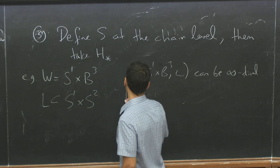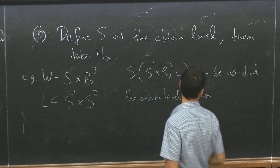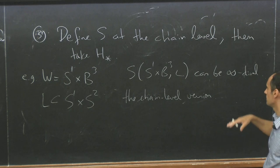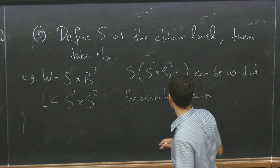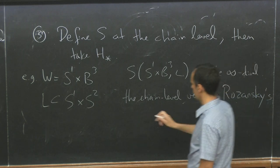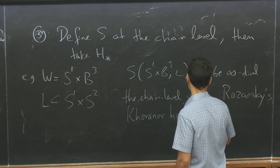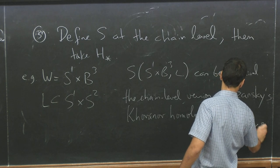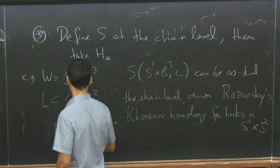But the better version, the chain version, the expectation, I mean, you, so, remember in this case, this was some Hochschild homology of some categories. So, you can now do Hochschild homology of a different category, which is done at the chain level. And this is what Rozansky did. So, this is, so Rozansky wrote a paper, you get Rozansky's Khovanov homology. For links in S1 times S2. And this is locally finite dimensional. In every degree, it's finite dimensional.